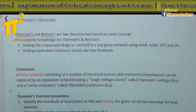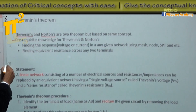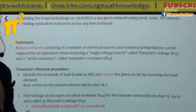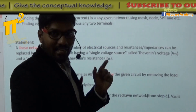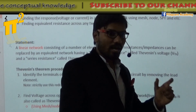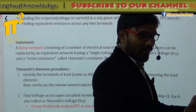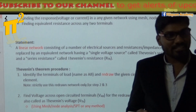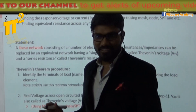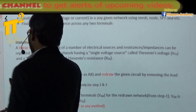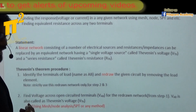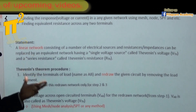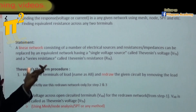Let's come to the statement of Thevenin's. The statement says: a linear network — so the opening statement itself is 'a linear network.' What does it mean? It is valid only for linear networks, or you can say it is valid for any linear network.